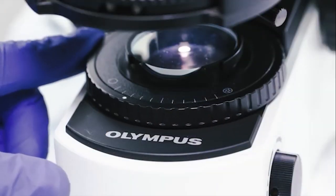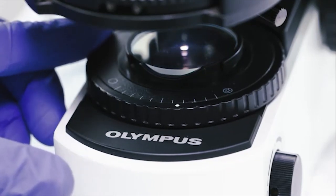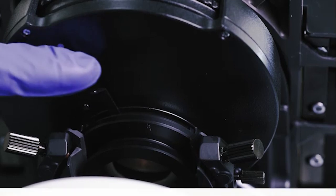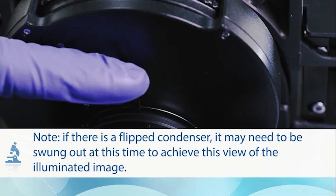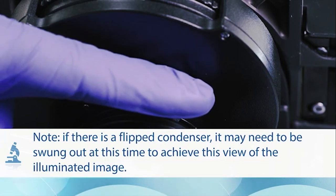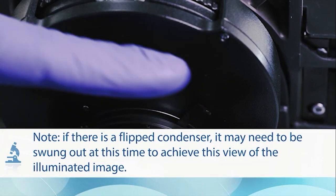Close the field diaphragm until the diameter of the illuminated image is smaller than the field of view. Please note, if there is a flipped condenser, it may need to be swung out at this time to achieve this view of the illuminated image.